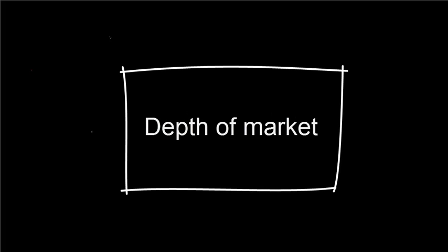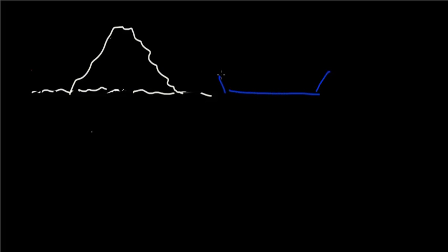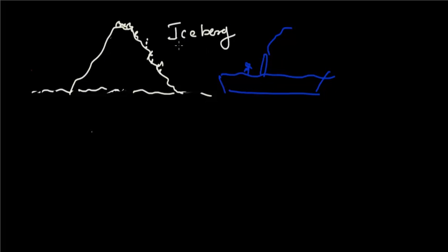Let's try to understand what an iceberg is. When you are traveling by sea, there is a big formation of ice which you see. This is the ship you are traveling on, and you see this ice. When you see it, you say the size seems to be pretty small, so you can circumvent this ice — but that would be a bad idea.